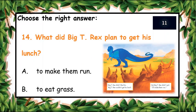The next question: what did Big T-Rex plan to get his lunch? A: To make them run, B: To eat grass. What do you think? You have ten seconds to answer. A: To make them run — because he wants to get his lunch.